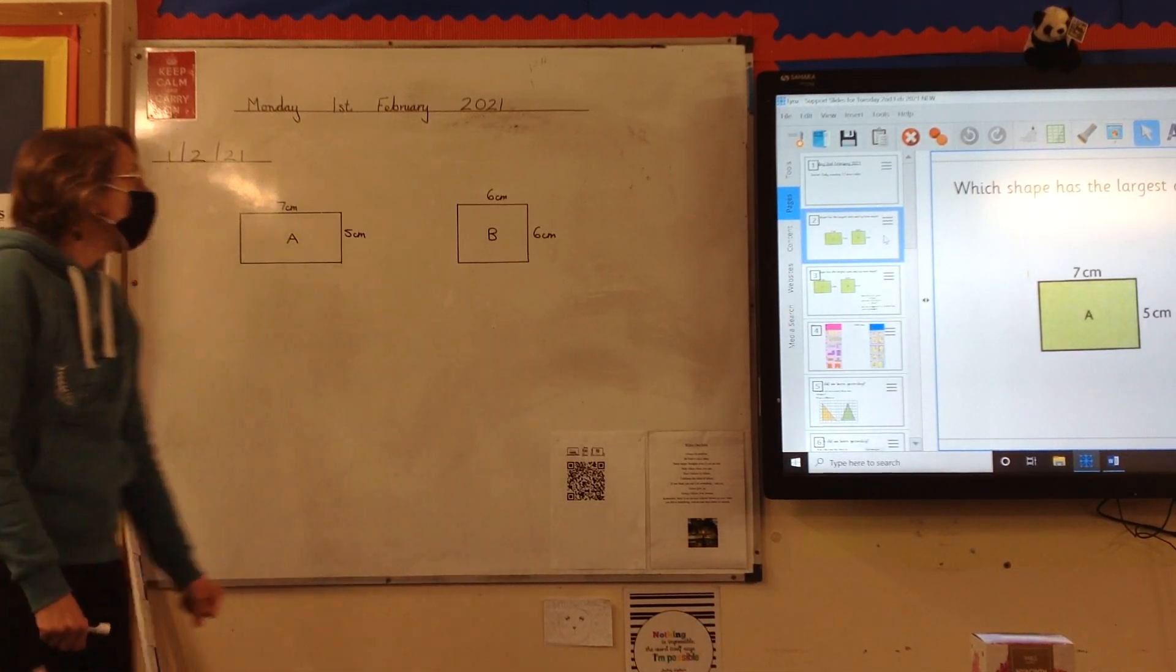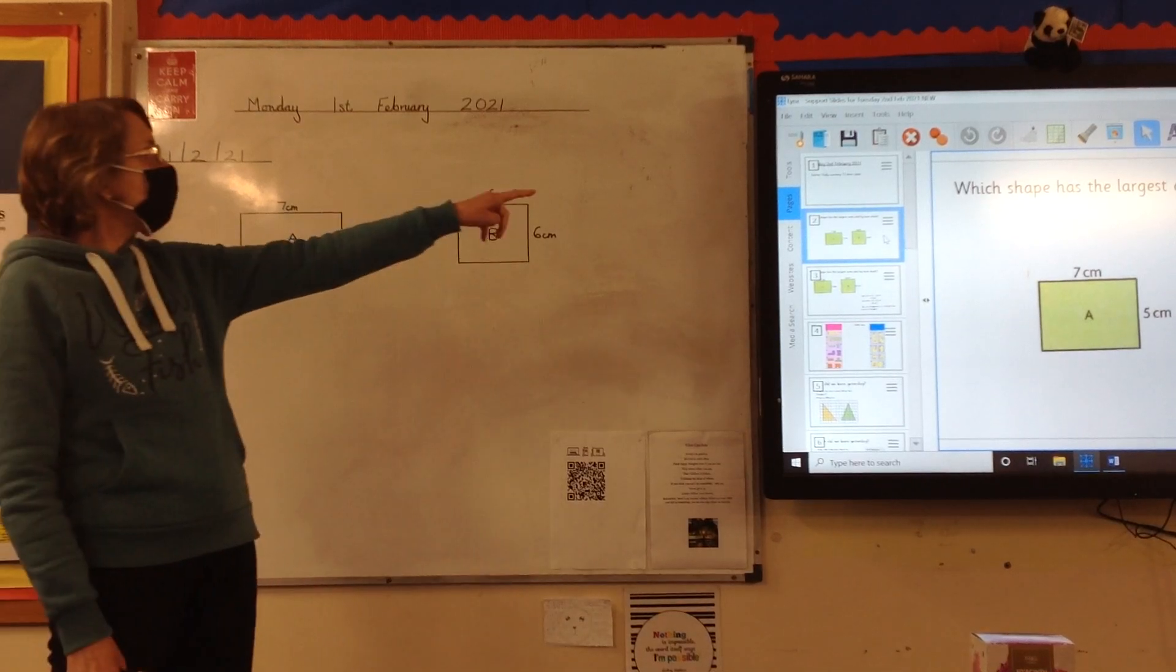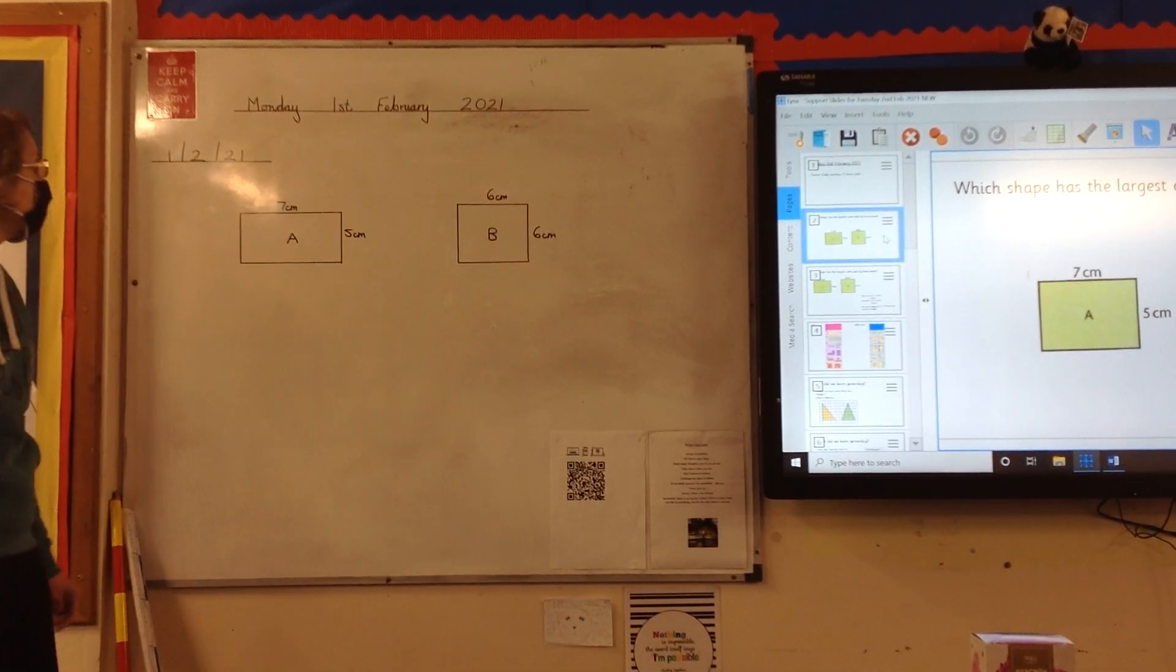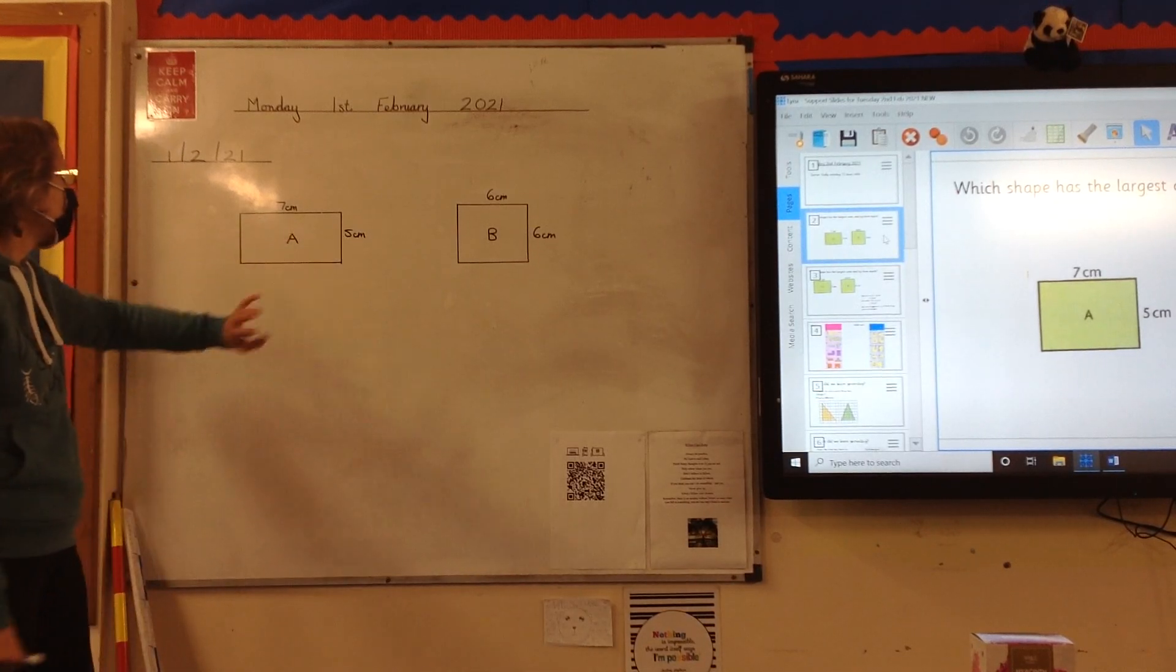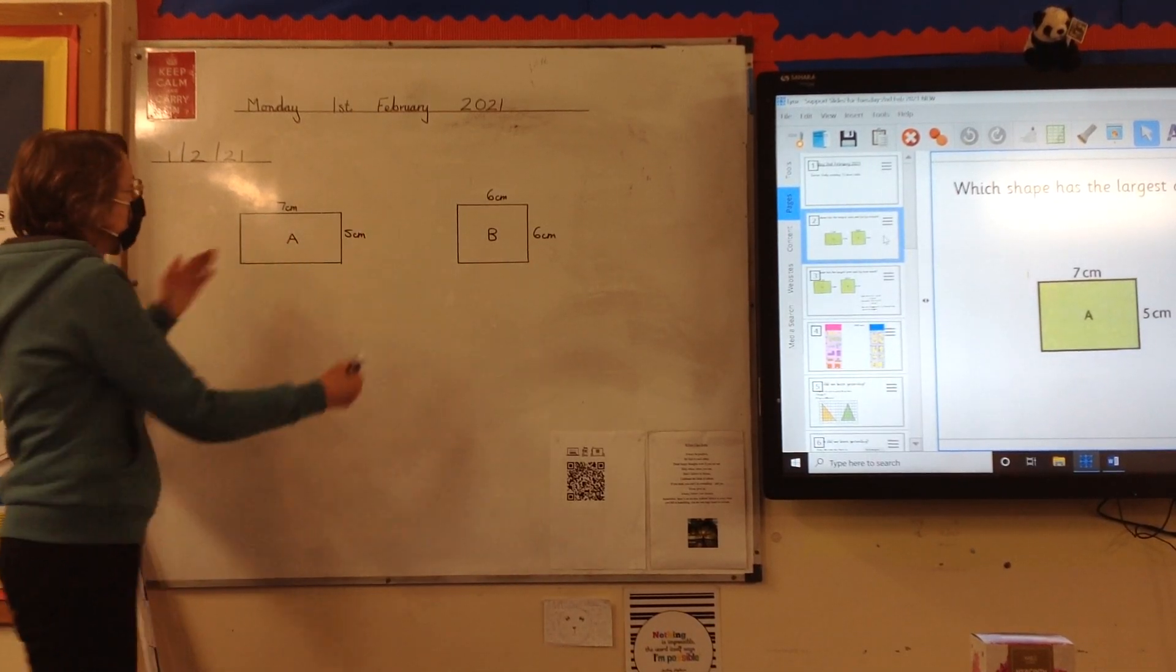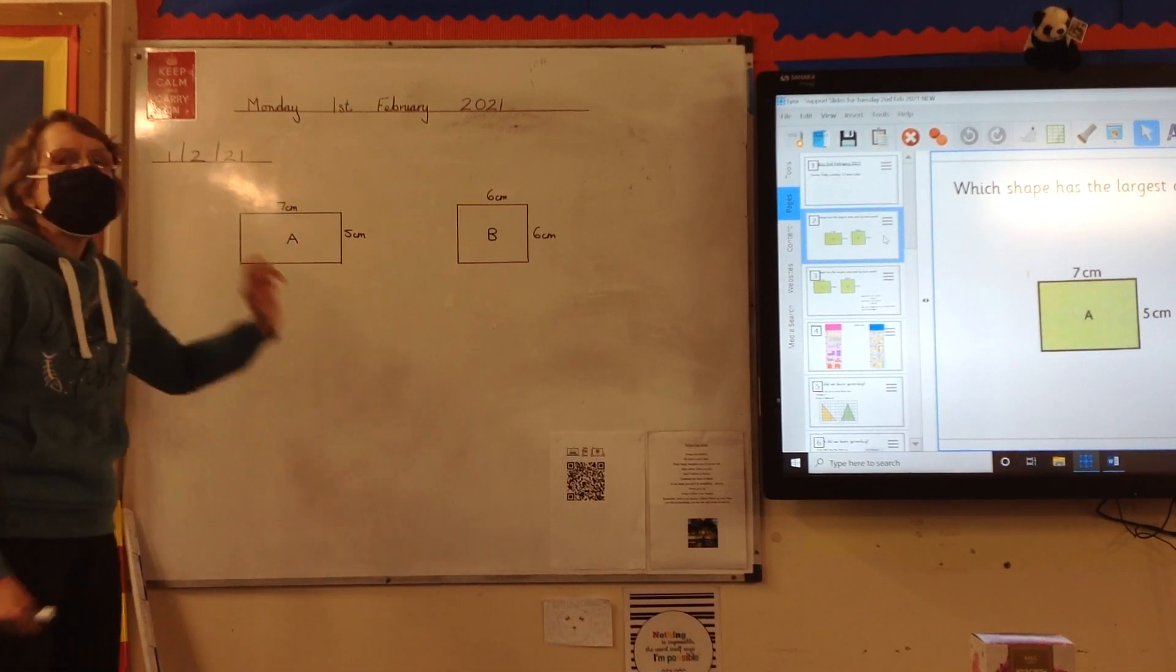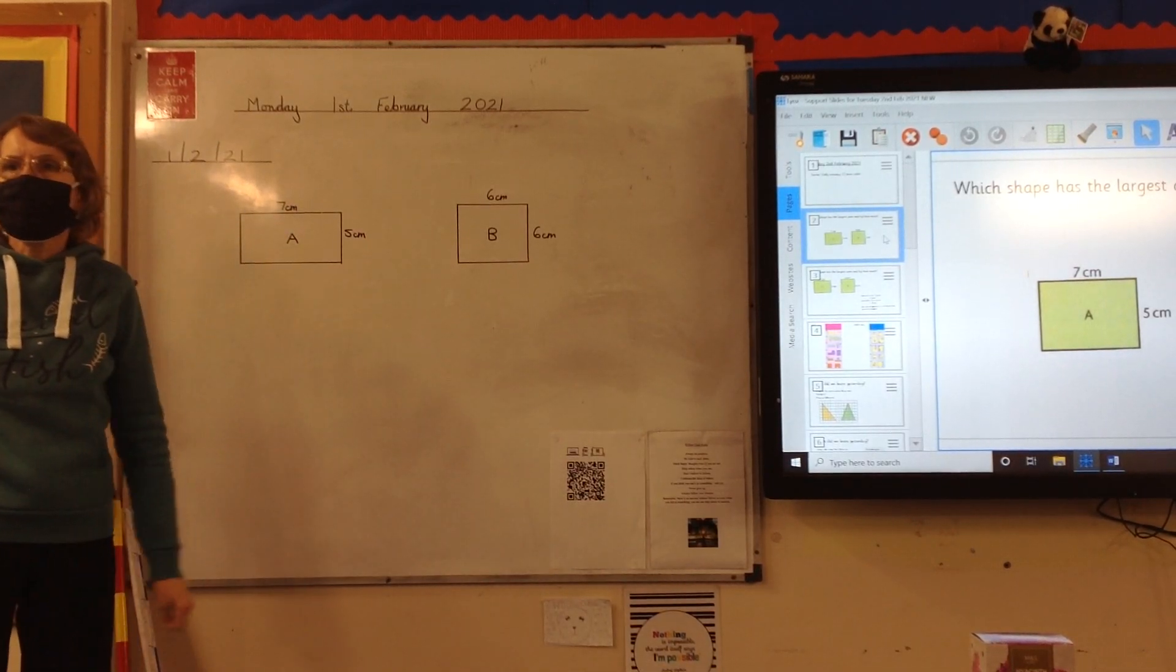Good, okay. The question says, which shape has the largest area and by how much? It's hard to tell by looking at it - that one's a bit longer that way, that's a square. We need to work out the area.